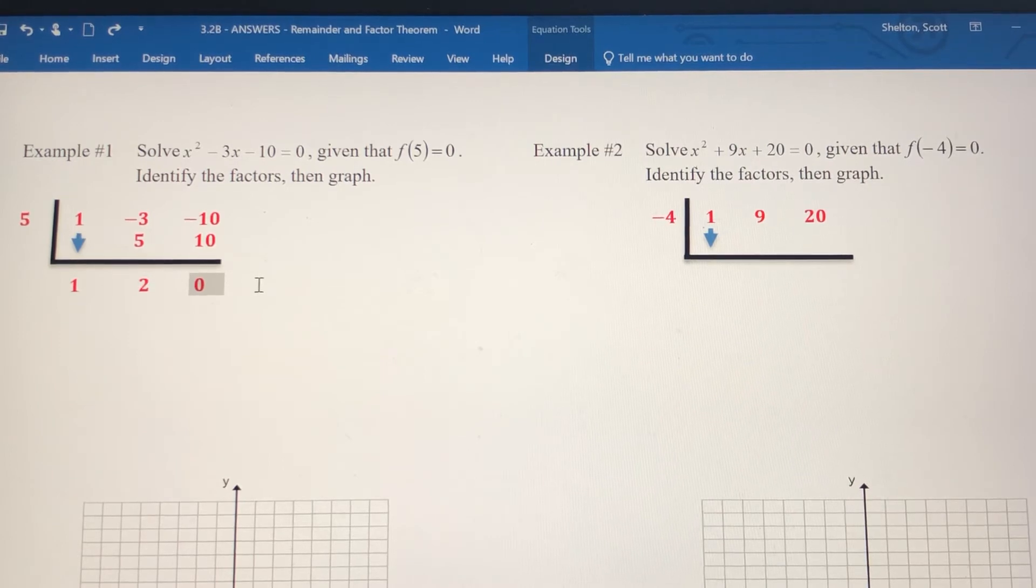What that tells us is x minus 5 is going to be one of my factors. If 5 is a zero, then x minus 5 is a factor. These two numbers right here give me the coefficients of the second factor: this would be the coefficient of x, and this would be the constant. They're both positive, so x plus 2 is the other factor.